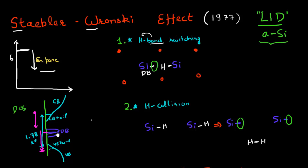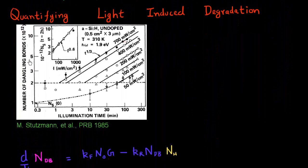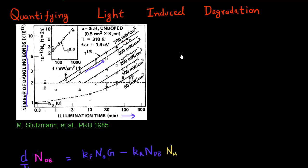Researchers have tried to quantify how these dangling bonds are created and how they evolve over time. They have very meticulously measured the number of dangling bonds as a function of the illumination time — the time for which you keep the cell exposed to sunlight. It clearly shows that as you keep the cell exposed to sunlight, you see an increase in the number of dangling bonds. This curve is plotted in log-log scale, so this linear slope in a log-log scale means you have a power law dependence of the number of dangling bonds on the illumination time.